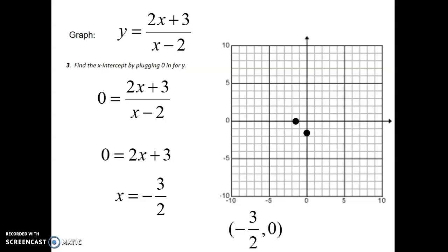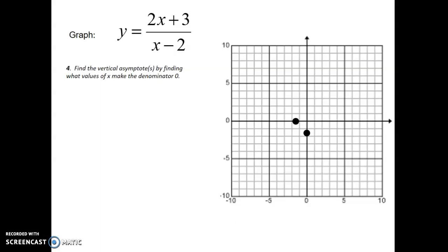Plot this point somewhere between negative two and negative one on the x-axis. Step four, we're going to find the vertical asymptote. This is where you use the denominator of your fraction — take it, set it equal to zero, and solve for x. You'll get x equals two. Your vertical asymptote is a dashed line at x equals two. You can never cross this boundary when graphing. If you went through that line at x equals two, your fraction would become undefined because you'd have zero in the denominator. Think of it like a force field.